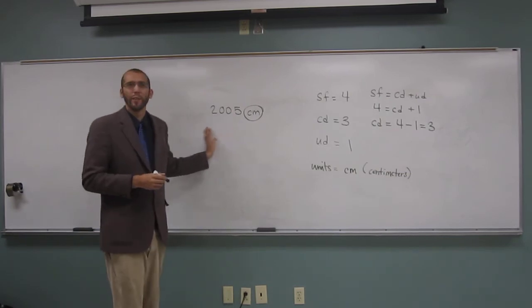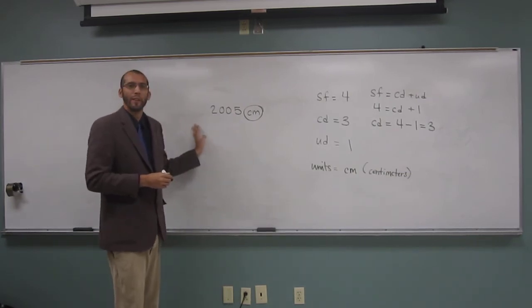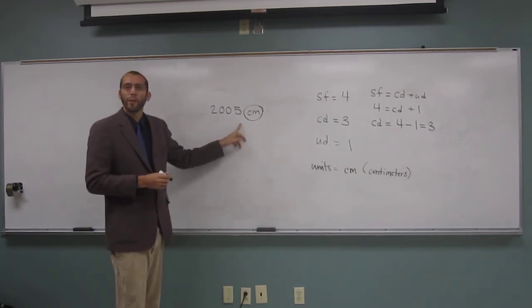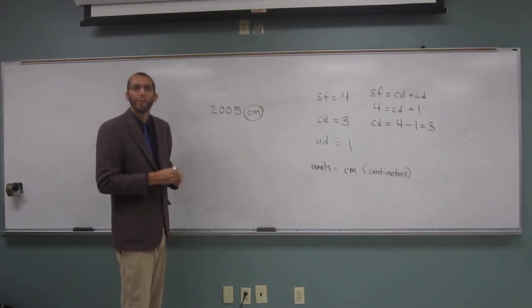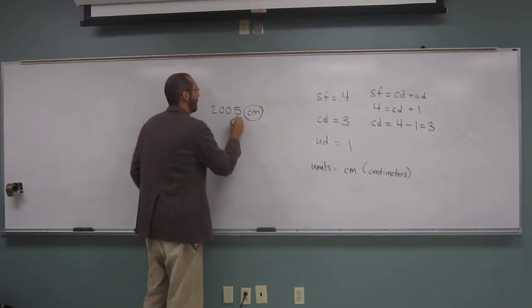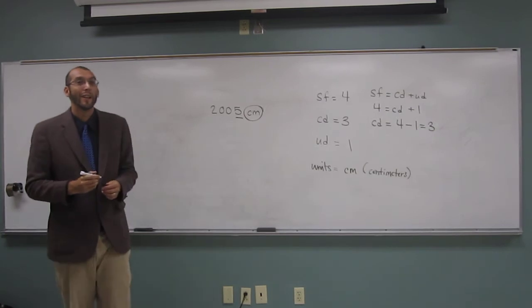Five. Is it the two, the zero, zero, or the five? Five. The five. Why would you say the five is the uncertain one? The last one. It's the last one, okay?